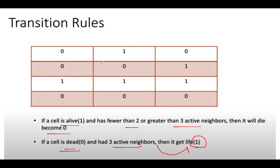Let's try to understand the issue by an example. Consider this particular cell — let's count the number of active neighbors. Three of them are active, and the current state is zero. If the state is zero and has three active neighbors, then it will get to life. But if we directly update this state to one, then the rest of the computations for its neighboring cells will get corrupted because you have assumed this cell has already gone live. In order to solve this, we should bring in intermediary states.